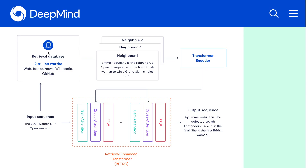One major difference from previous methods is that RETRO uses a database that is much larger. Previous methods mainly used Wikipedia, whereas here there is a large collection of news, GitHub, and more. Furthermore, RETRO retrieves a much larger number of neighbors, encoding far more tokens as input to the language model. Finally, some previous methods do retrieval-based language modeling end-to-end, fine-tuning both the encoder and decoder. In contrast, RETRO freezes the transformer encoder model and inputs the same embeddings to the decoder, which seems to have some benefits.